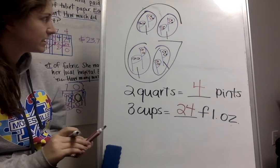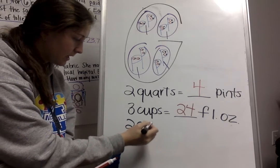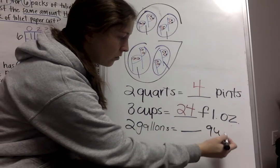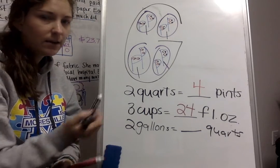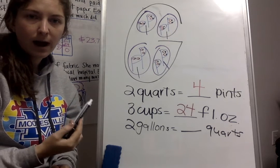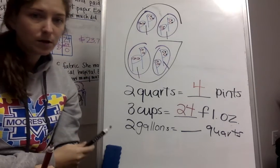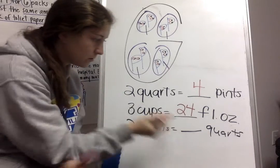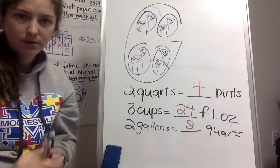Let's think of one more question to ask. Two gallons equal blank quarts. So how many quarts would be in two gallons? If I looked, I have one, two, three, four quarts in one gallon. So I'm going from big to small, so I'm going to multiply. There are two gallons, four quarts in each, four times two. So this answer right here is going to be eight quarts.